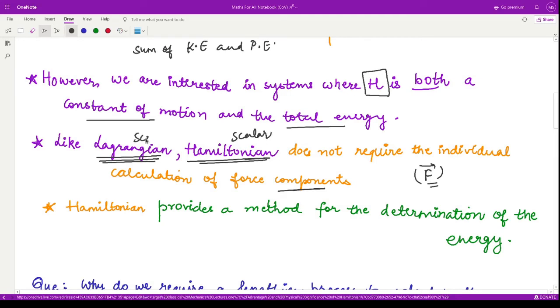The thing that differentiates it from Lagrangian is that this Hamiltonian being a scalar, it provides a method which could determine the total energy of the system. Although in some particular cases, it provides us a method to calculate the total energy of the system.